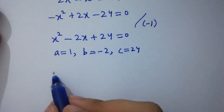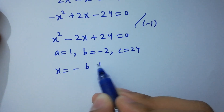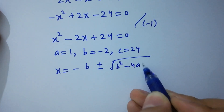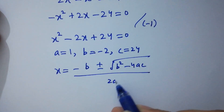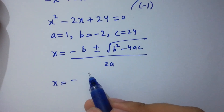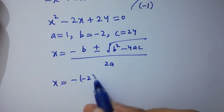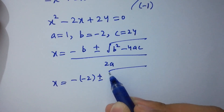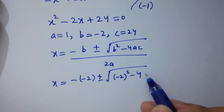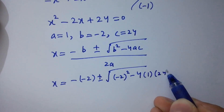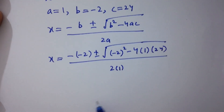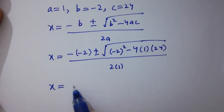Applying the quadratic formula: x equals minus b plus or minus square root of (b squared minus 4ac) over 2a. Substituting the values — b is minus 2, a is 1, c is 24 — we get x equal to 2 plus or minus square root of (4 minus 96) over 2.